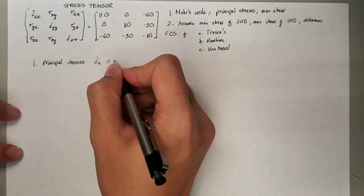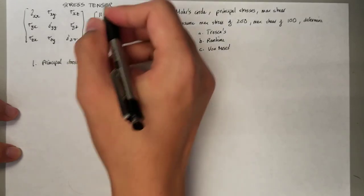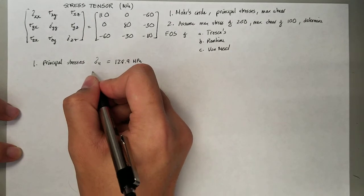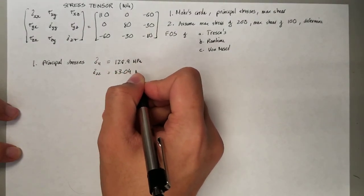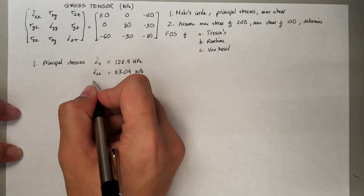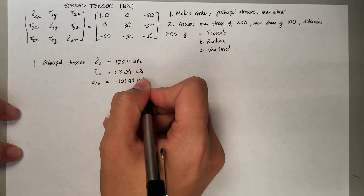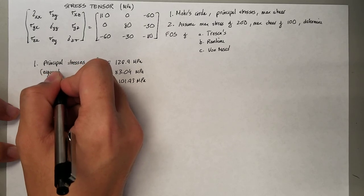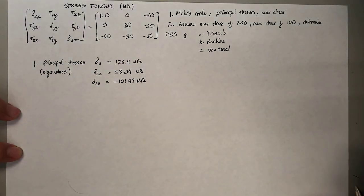If you solve for the eigenvalues of the matrix, the principal stress σ₁₁ is going to be 128.9 MPa, σ₂₂ is going to be 83.04 MPa, and σ₃₃ is going to be negative 101.93 MPa. Remember, you solve for these using the eigenvalues. So where does the maximum shear occur?